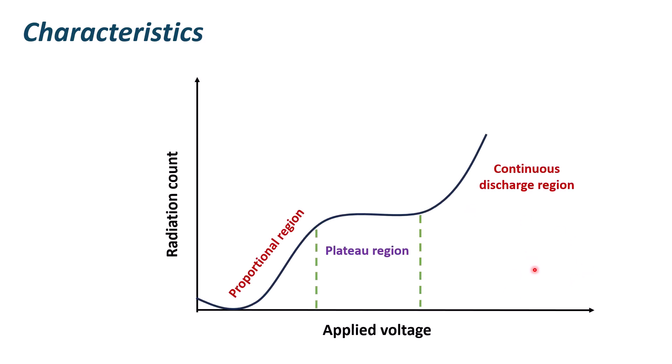The characteristics of GM counter are like this. Characteristics are drawn with respect to applied voltage and generated radiation counter. If you see in this diagram, at first, there will not be much amount of increase in the count. Enough voltage should be applied to the tube in order to have working from it. The tube does not function below a certain threshold. At first, the applied voltage is proportional to the number of pulses generated. This region is termed as proportional region.